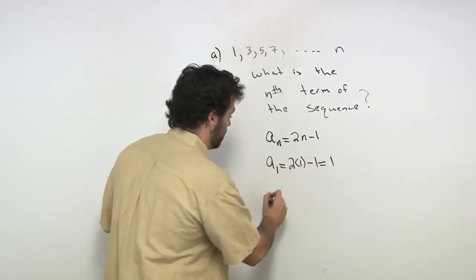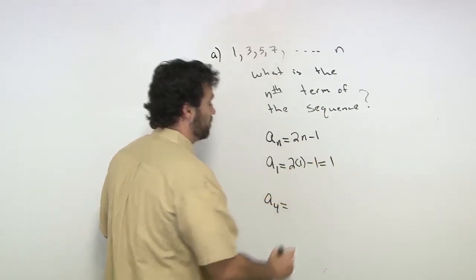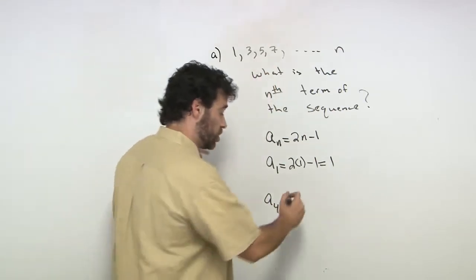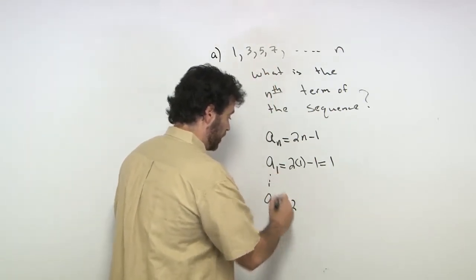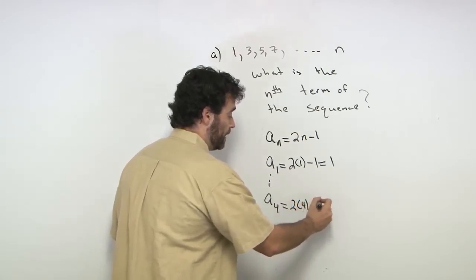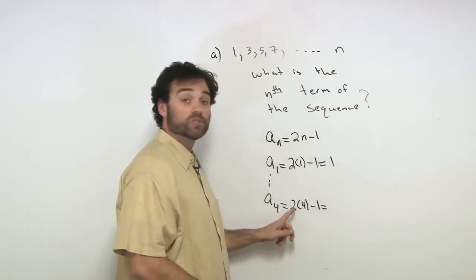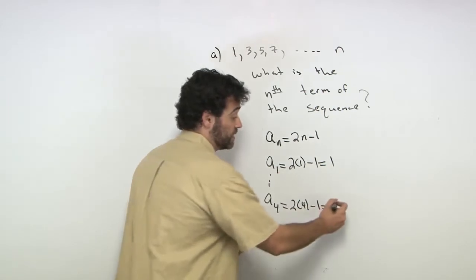And then we know the fourth term, so let's say A_4. We want to see if that is, in fact, 7. Just a good check. We're not going to do all four, but we're going to say 2 times 4 minus 1. That's indeed 2 times 4 is 8 minus 1 is 7.